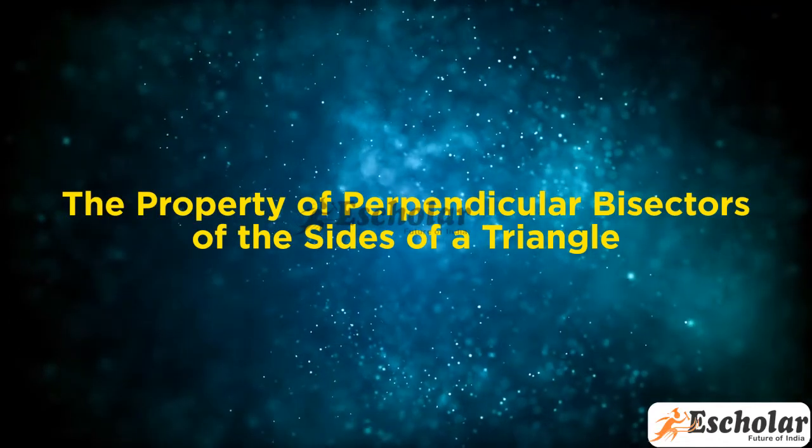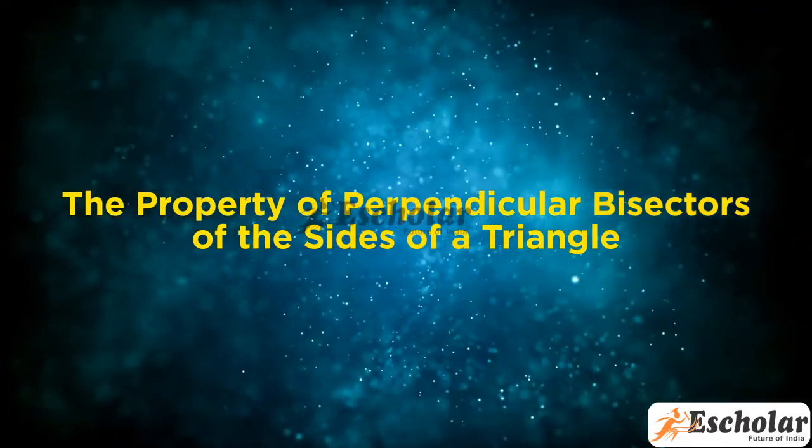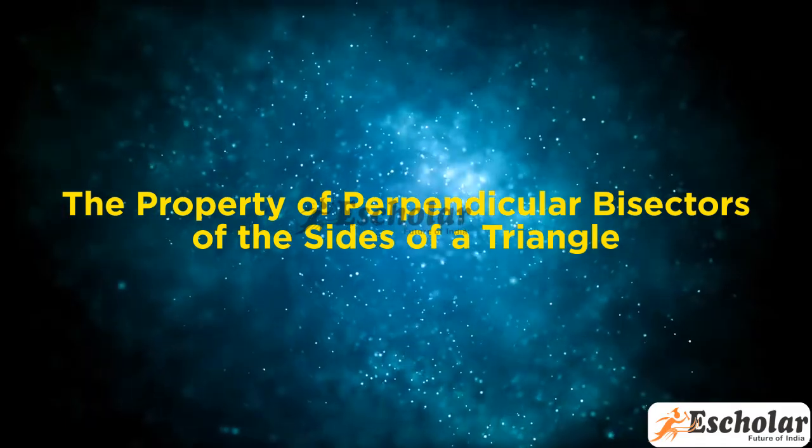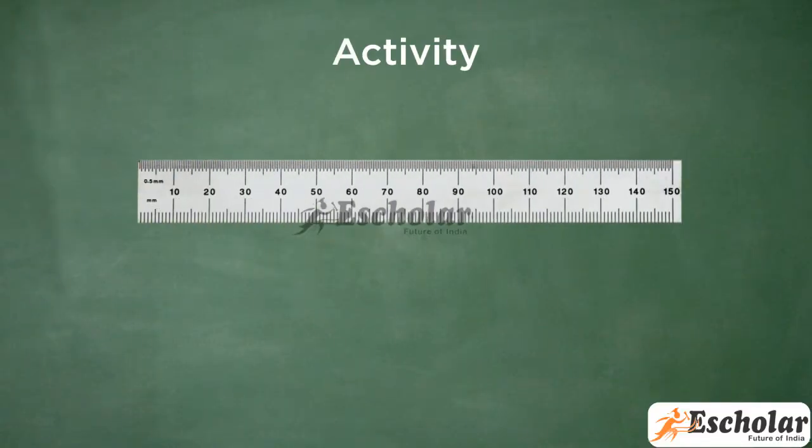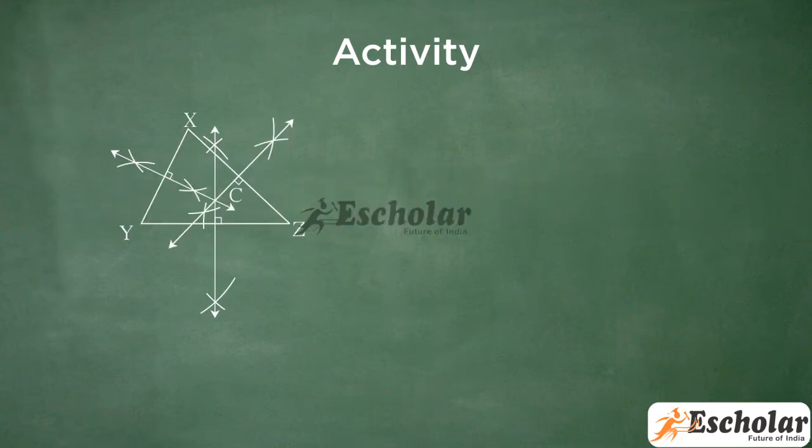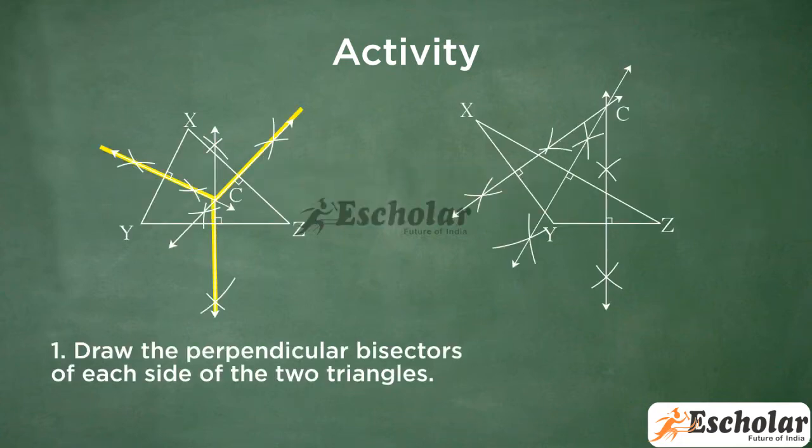The Property of a Perpendicular Bisector of the Sides of a Triangle. Activity: First, use a ruler to draw an acute angle triangle and an obtuse angle triangle. Draw the perpendicular bisectors of each side of the two triangles.